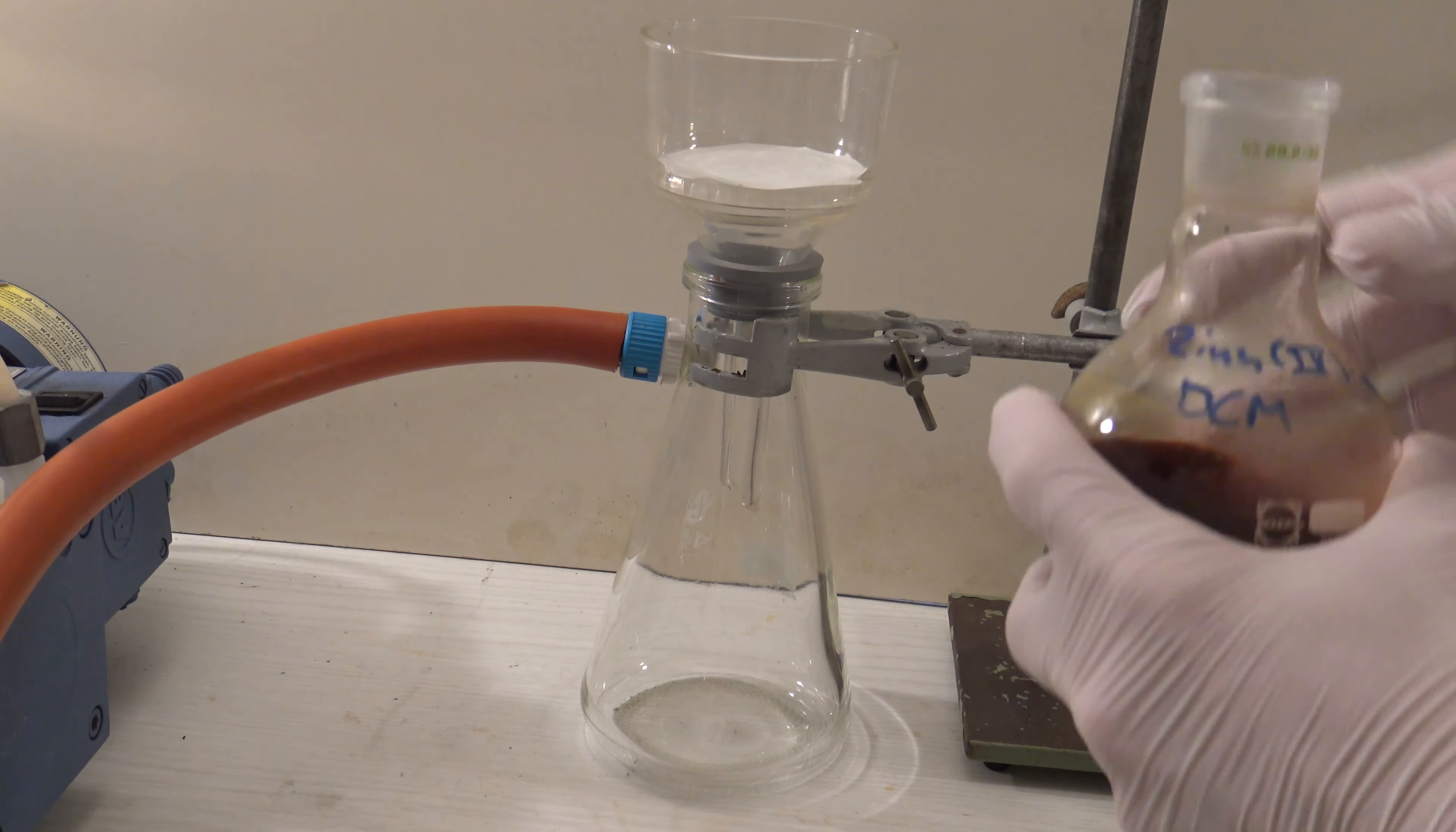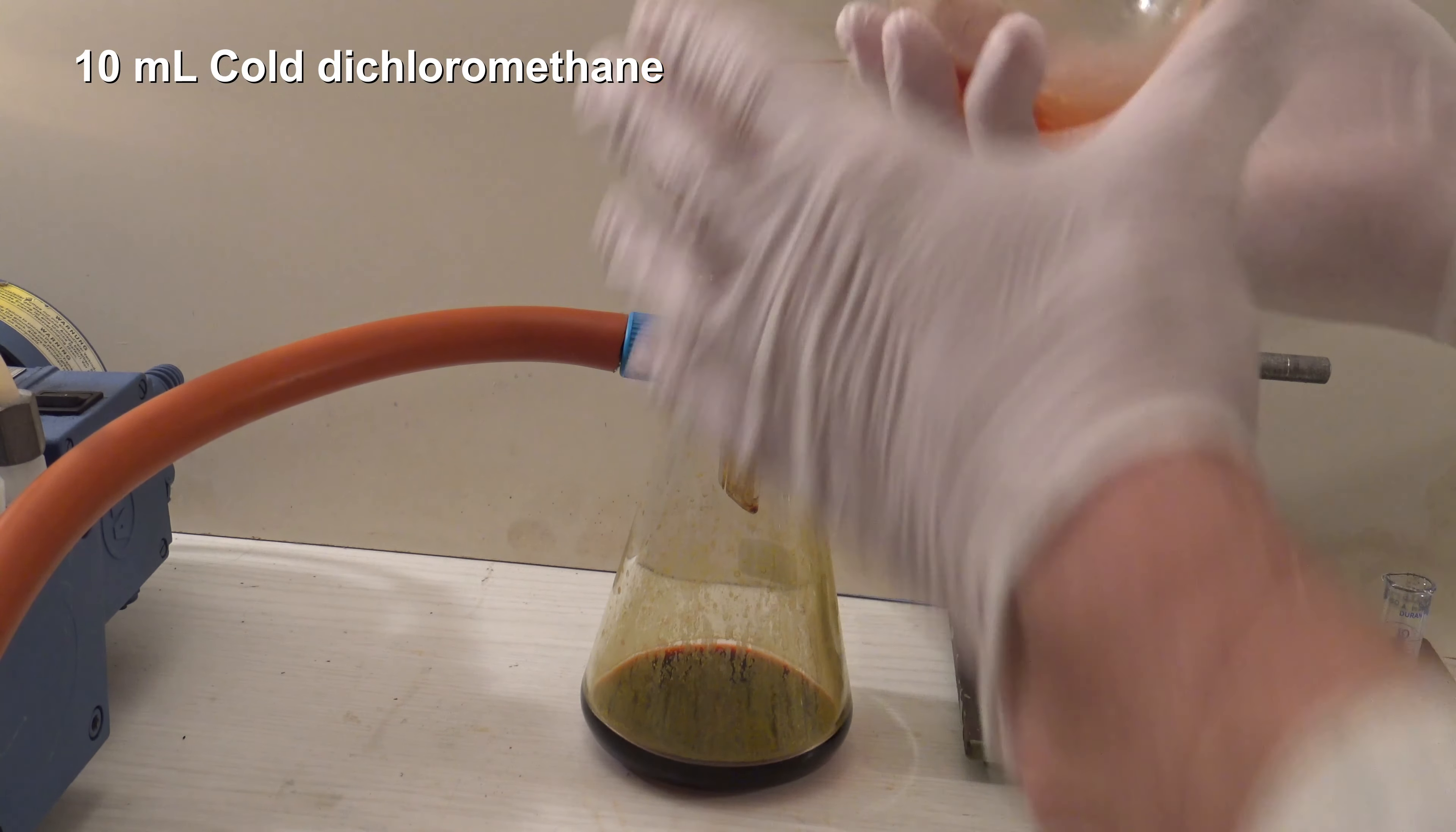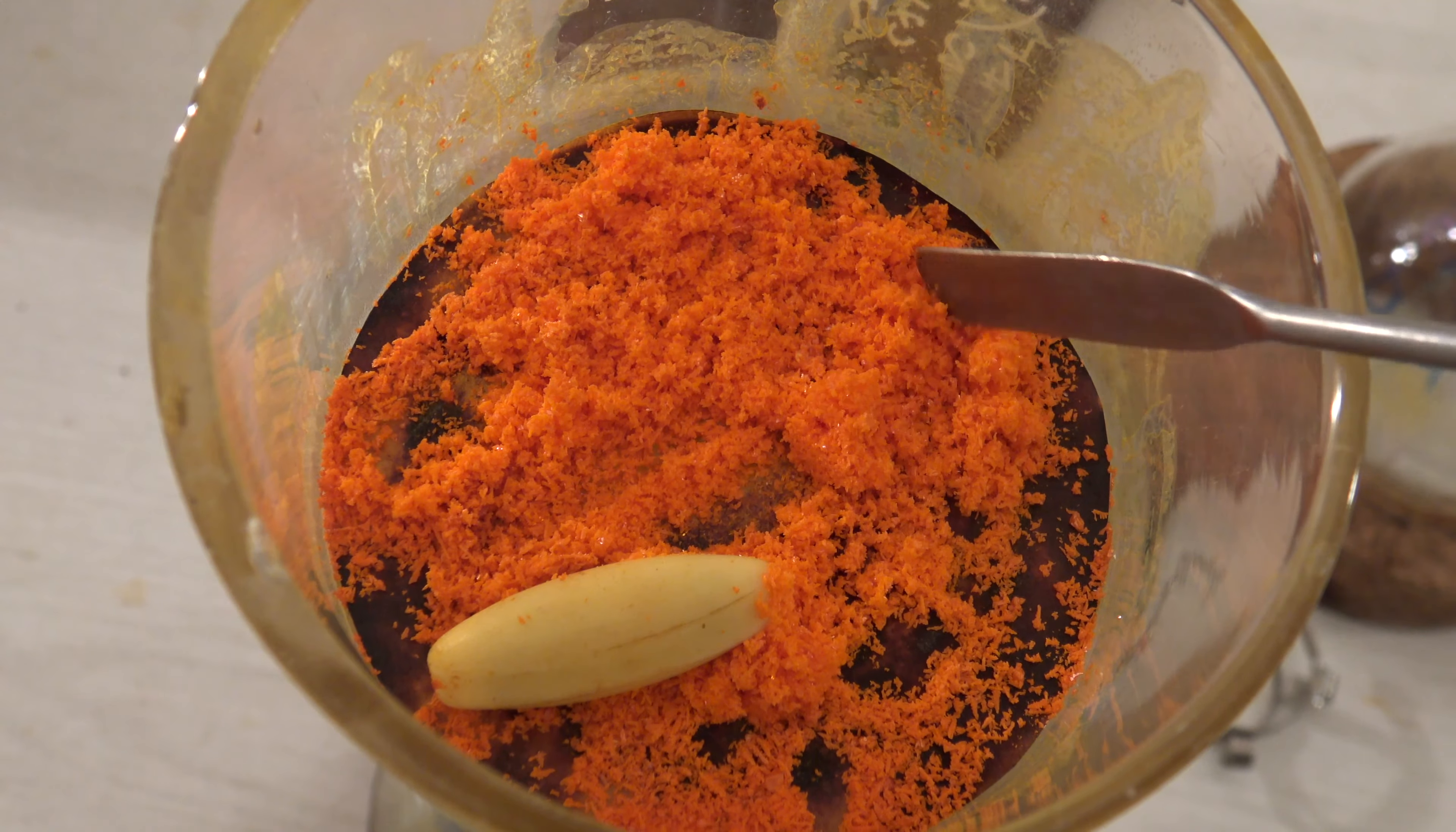This helps to prevent the solution from heating up again and causing a part of the product to redissolve. Then 10 milliliters of cold dichloromethane were used in small portions to wash out the residual product. Beautiful crystals of tin(IV) iodide were obtained. The filter paper was stained by the residual iodine.